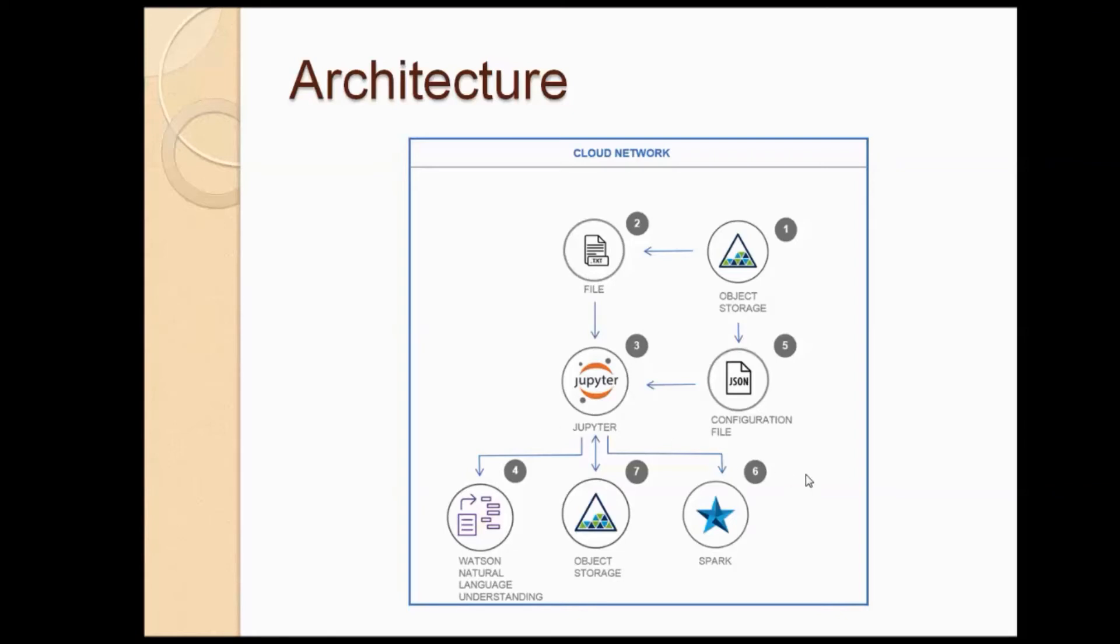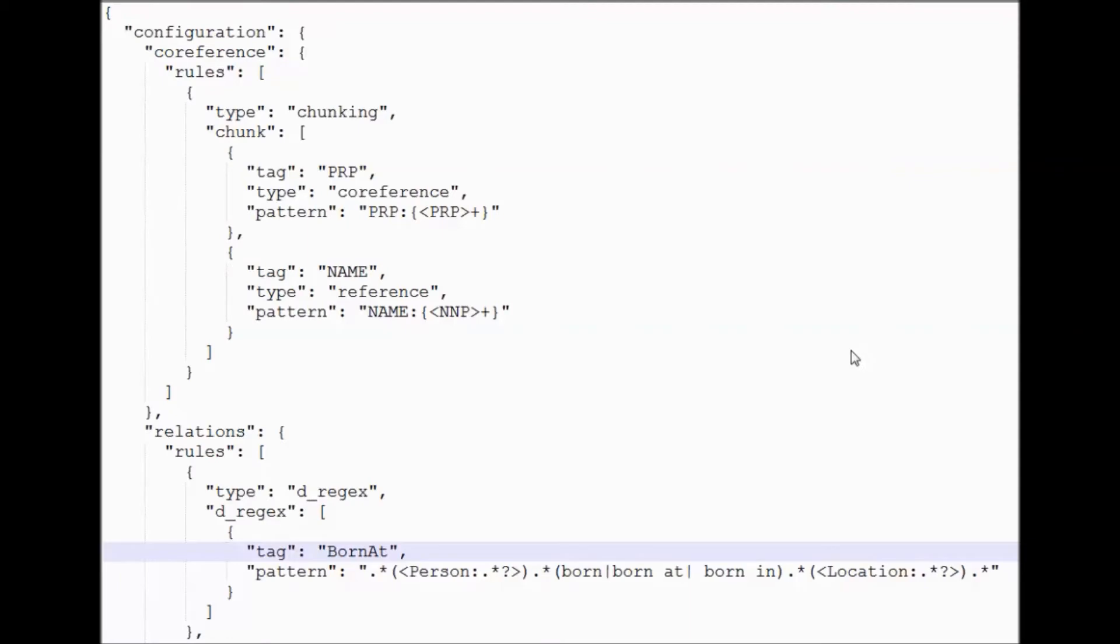Now let us look at the input configuration JSON file, the input documents and the output from the correlation algorithm in greater detail. Let us look at the input configuration required by the algorithm. The input configuration is divided into two categories: coreference and relations.